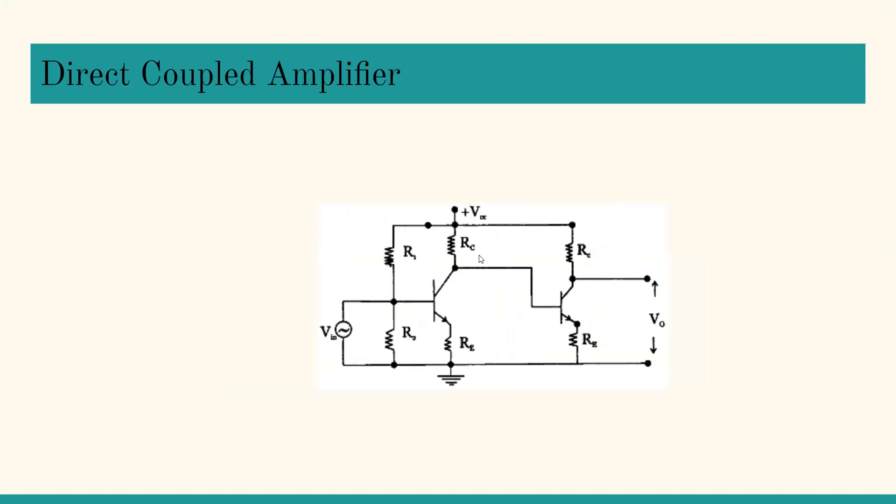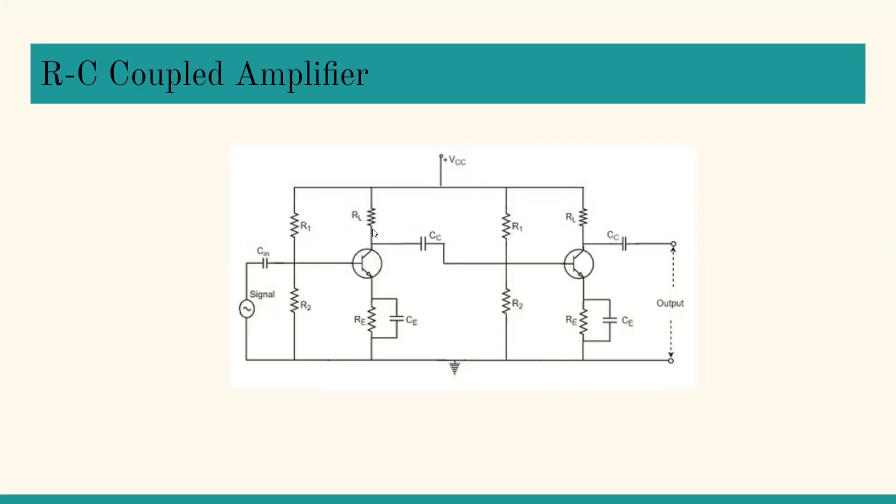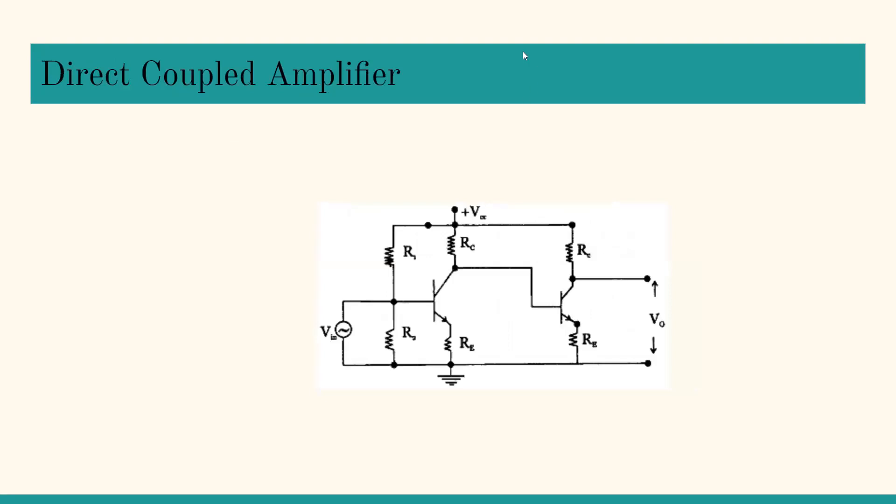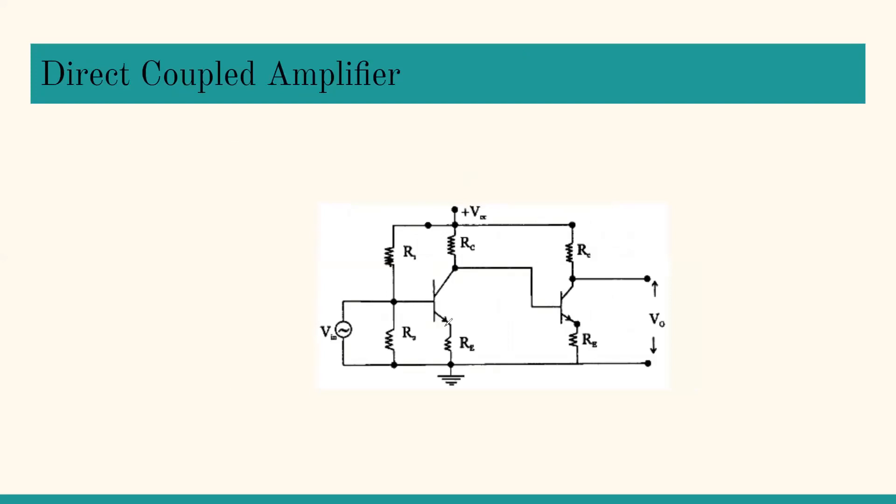That was about RC coupled amplifier. Let us see one more type: direct coupled amplifier. In your syllabus, transformer coupled and LC coupled are deleted. This is the last type of coupling amplifier - direct coupled amplifier. In RC coupled, R and C were joining the stages. If you want to join two bogies of a train, there has to be something which joins them. R and C were these two components which joined this section and this section.